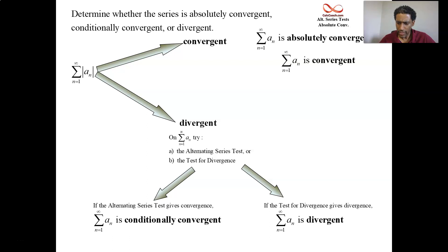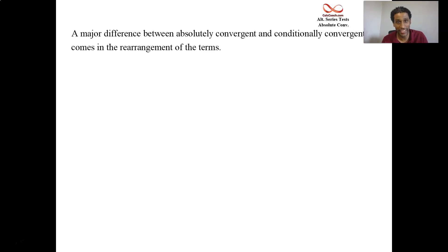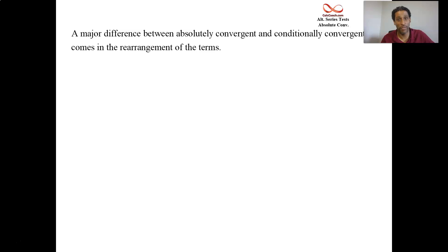Let's take a closer look at the difference between these two types of convergence. Why is absolute convergence stronger than conditional convergence? It comes in rearranging the terms. You're adding up infinitely many numbers, so why should juggling the terms mean anything? It shouldn't — why isn't that the same sum? Well, when you have conditional convergence, something very strange happens.